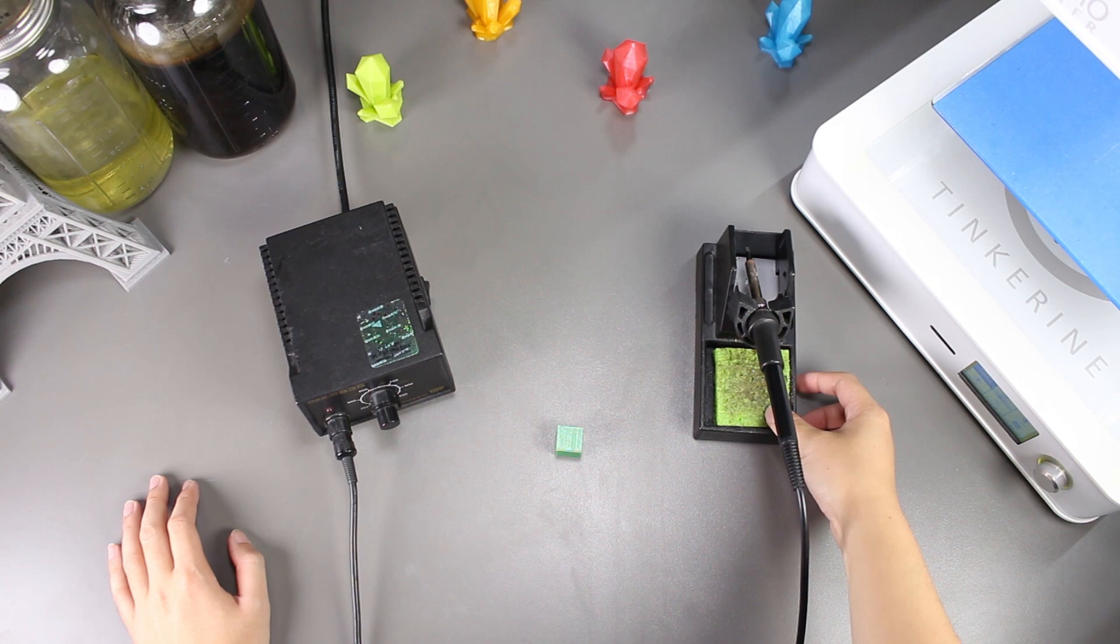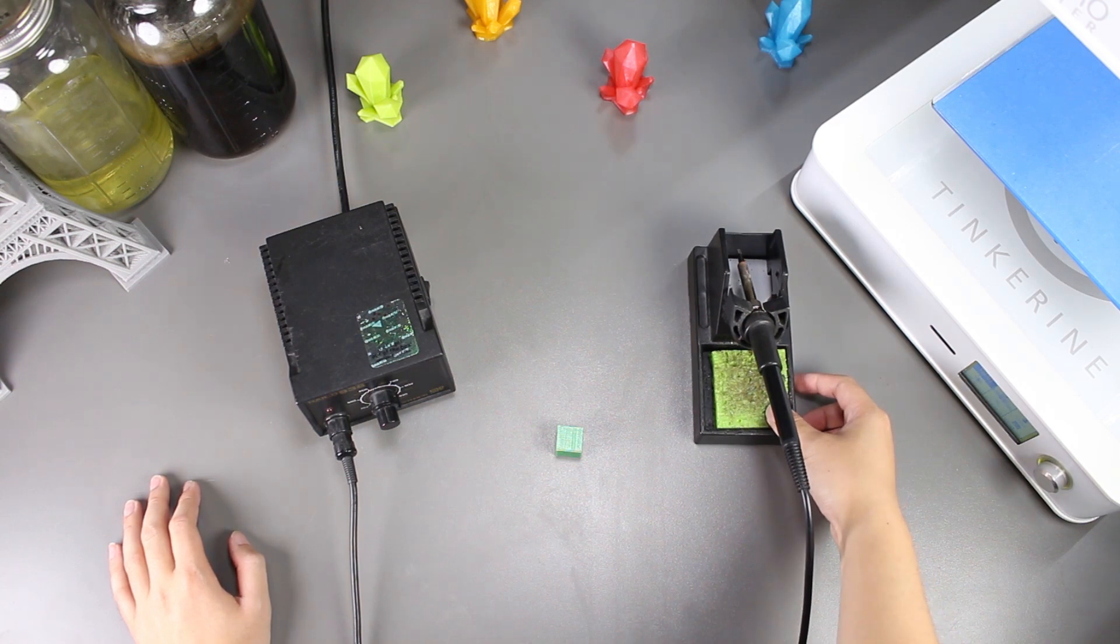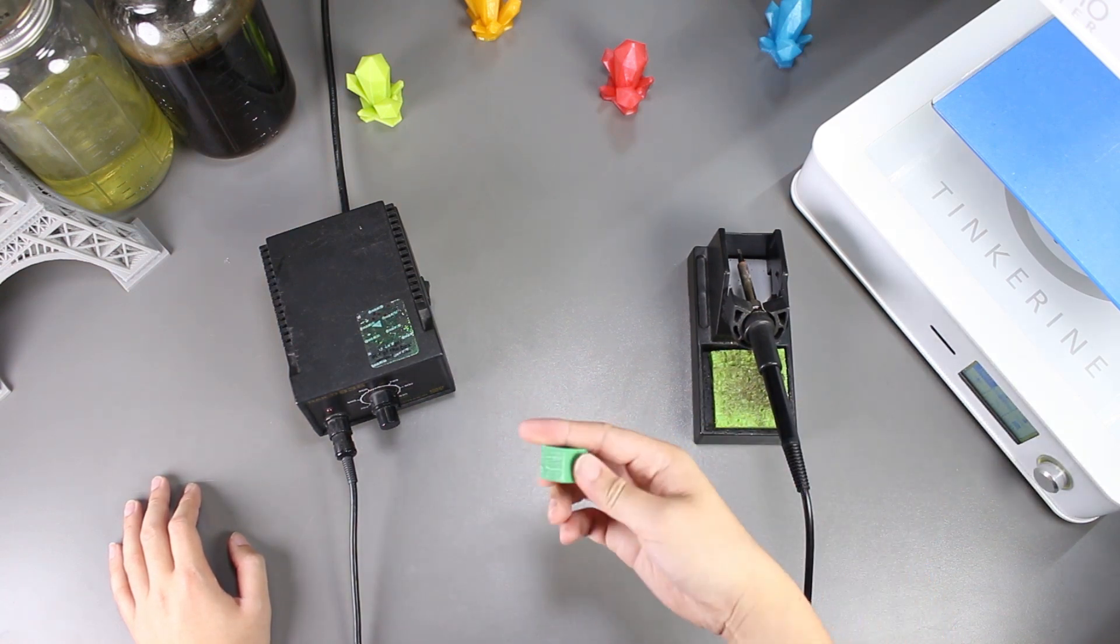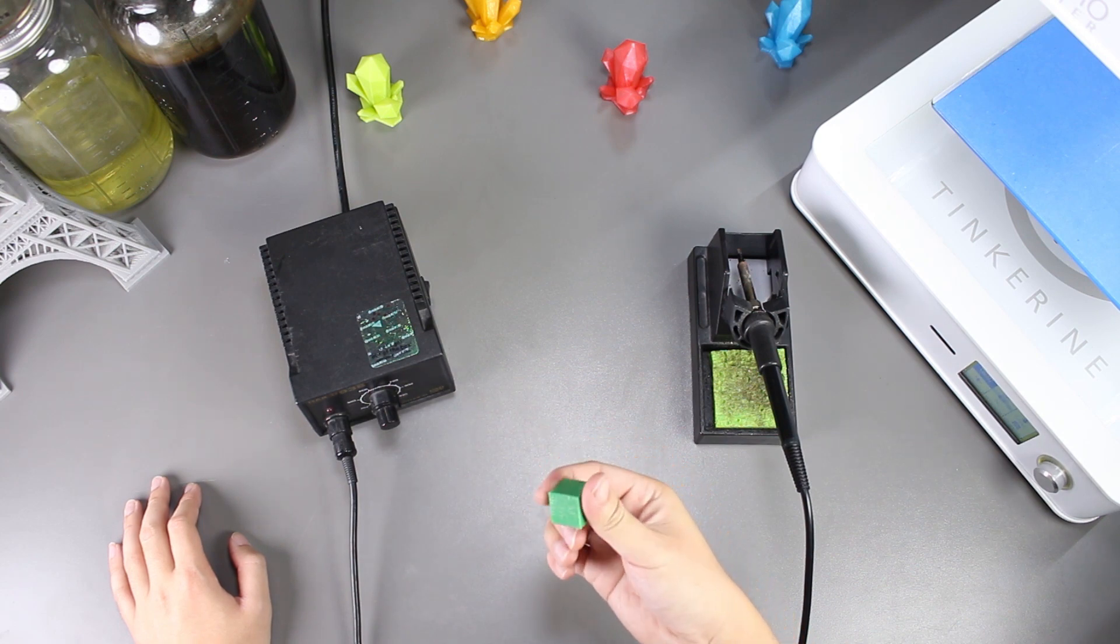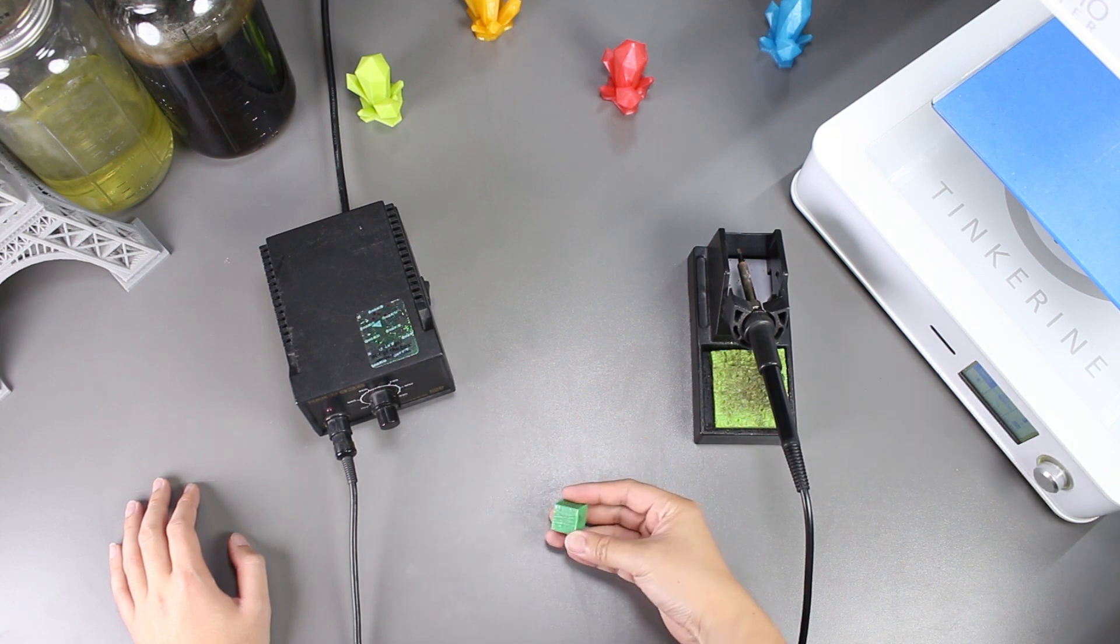Well there we have it. We tried to smooth our PLA print with a soldering iron. We definitely couldn't get the hang of using a soldering iron to smooth it out because there was a lot of streaks, but that may be because my temperature was a bit too hot. If I turn it down, maybe we'll get better results.